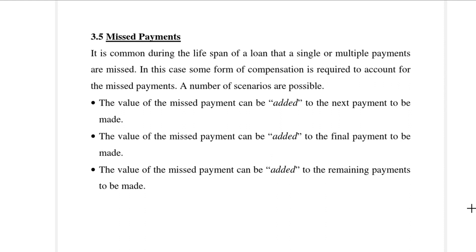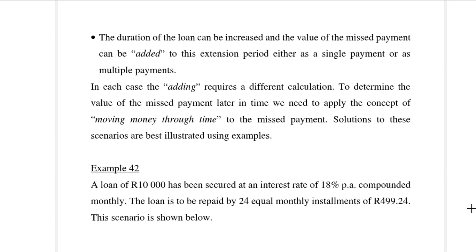In this short video we are going to do a little bit of revision on paragraph 3.5 on missed payments. It's common during the lifespan of a loan that single or multiple payments are missed. There are different ways to treat this: the missed payments can be added to the next payment, added to the final payment, added to the remaining payments, or the loan duration can be extended. We are not going to do the last option but we're going to look at the other three options in example 42.